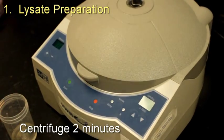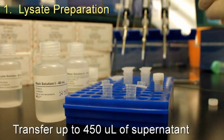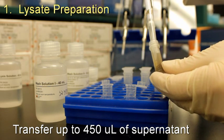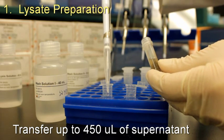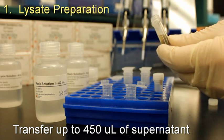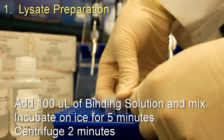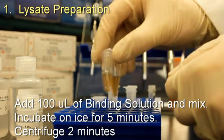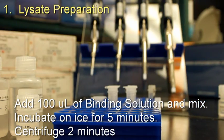Centrifuge for 2 minutes. Transfer up to 450 microliters of supernatant to a microcentrifuge tube. Incubate on ice for 5 minutes and centrifuge for 2 minutes.